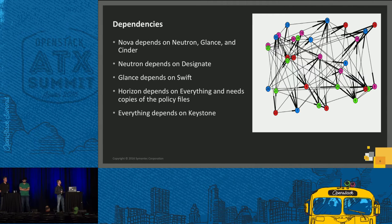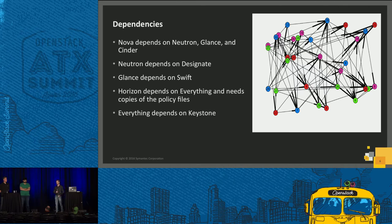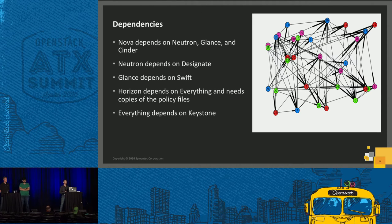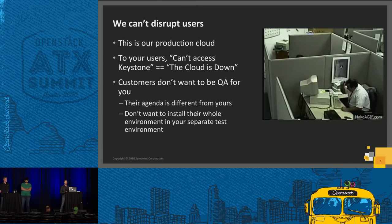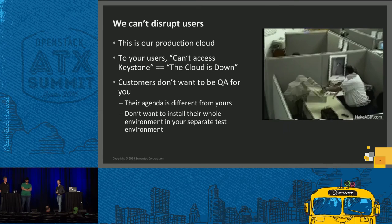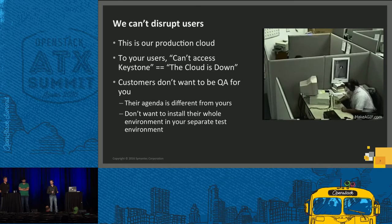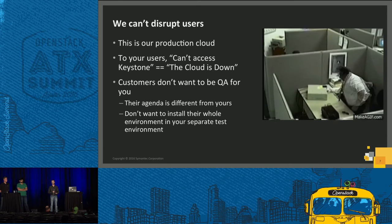This isn't our real dependency graph, but any OpenStack production environment will look something like this. Nova depends on Neutron, Glance, and Cinder. Neutron depends on Designate. Glance depends on Swift. Horizon depends on everything and needs copies of those policy files. And everything depends on Keystone. So if you make a change and a user suddenly can't access one of these pieces, you can have a large breakage chain, very difficult to debug. And this is our production cloud — to a user, if we break them, can't access Keystone is the same as the cloud being down.